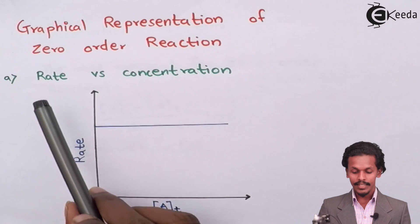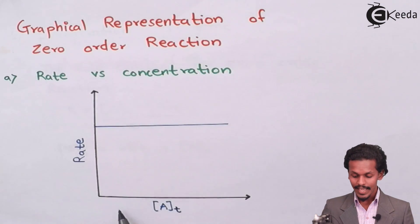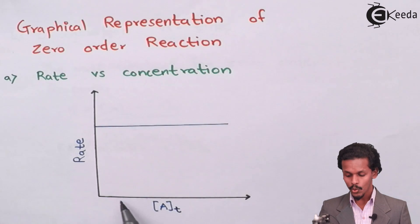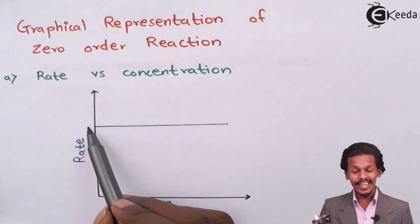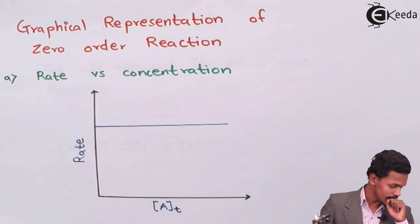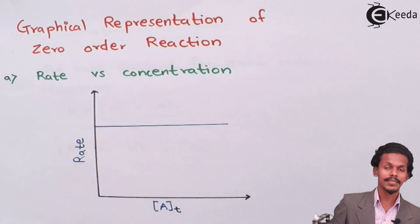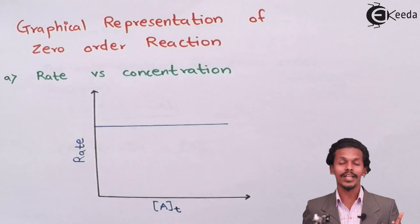which is the rate versus concentration graph. As you can see, as the concentration goes on increasing, that is the concentration of A subscript t, the rate remains constant, which means the reaction rate remains constant throughout the whole reaction.